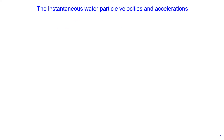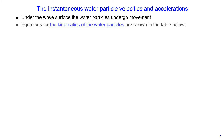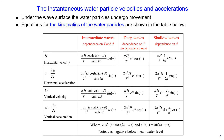Under the wave surface, water particles undergo orbital movements. We can estimate instantaneous water particle velocities and accelerations using equations for the kinematics of water particles as shown on this slide — horizontal velocity, horizontal acceleration, vertical velocity, and vertical acceleration. Depending on whether it's an intermediate wave, deep wave, or shallow wave, we have a set of equations applicable for each condition. These equations follow from linear wave theory and the velocity potential function. The derivation is reasonably complex, so I have summarized all the equations in this table.